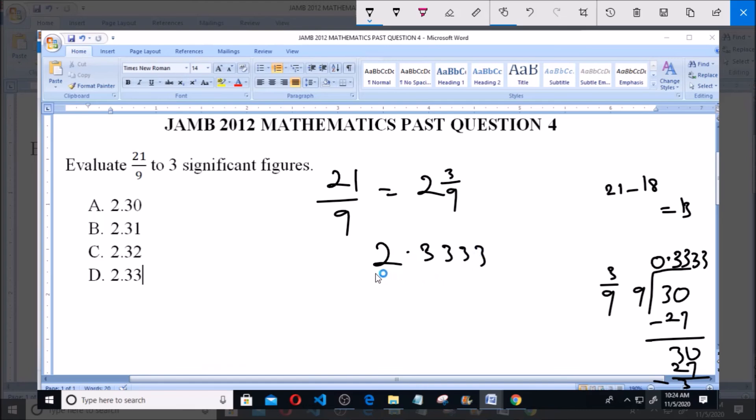So we are going to pick the first three significant figures, and that is 2.33. So the answer to this question is 2.33, which is option D.